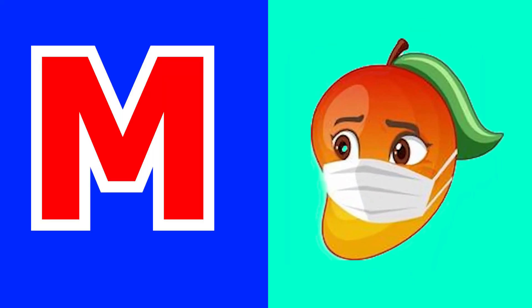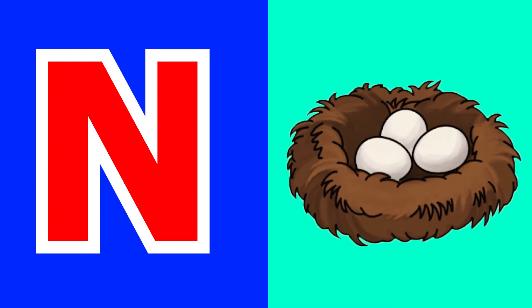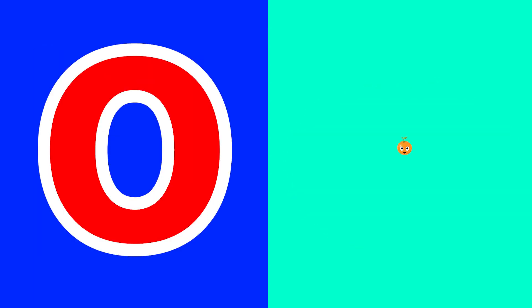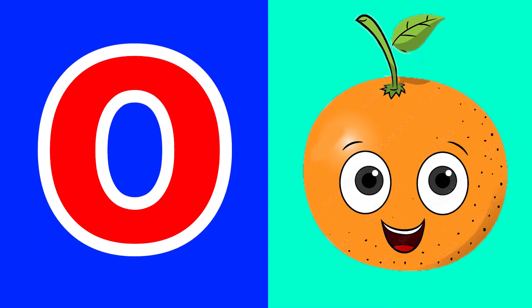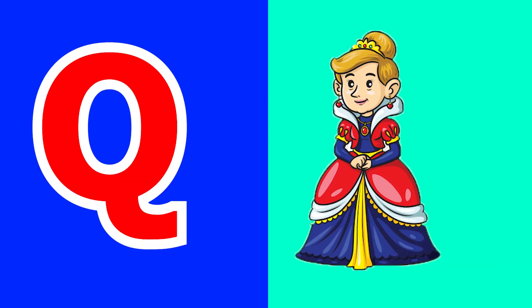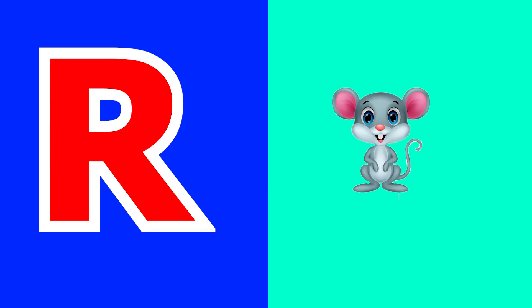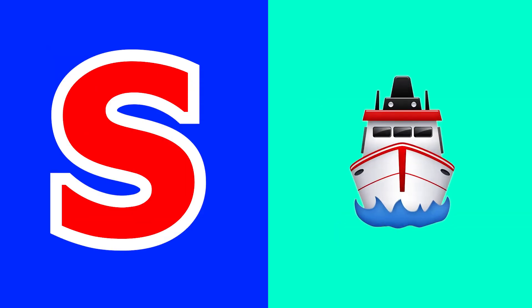M for mango, N for nest, O for orange, B for peacock, Q for queen, R for rat, S for sheep.